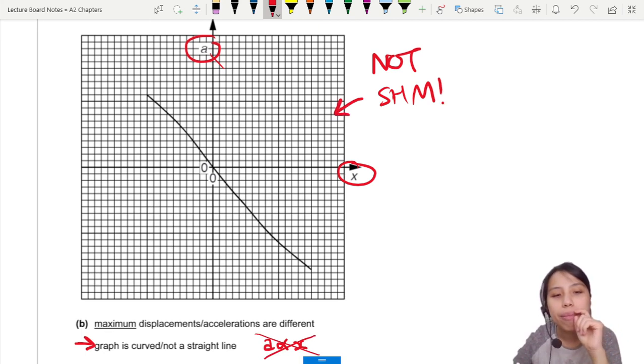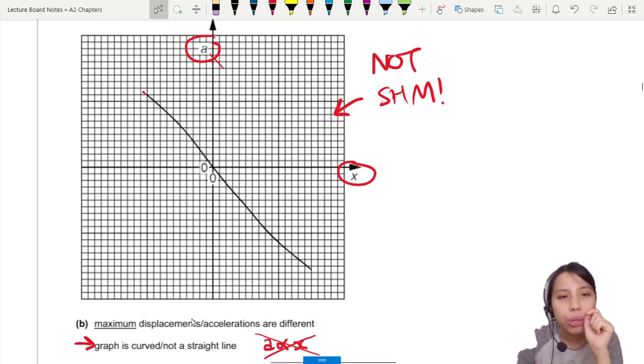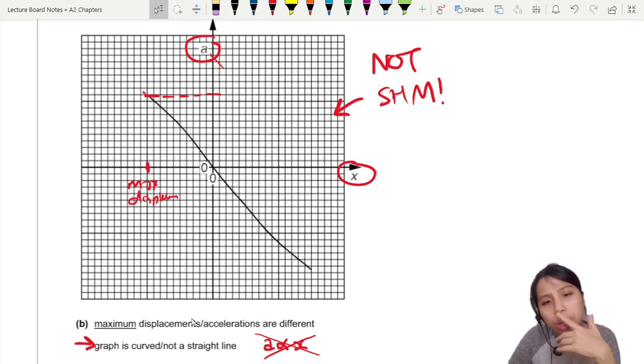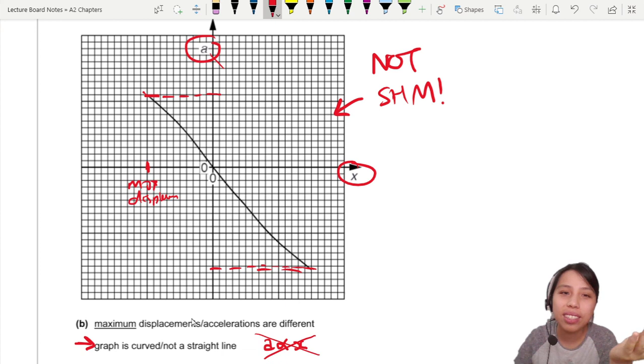Second problem. Maximum displacement or acceleration are different. So that means on one side of the graph, you come until this acceleration, maximum displacement. On the other side though, your acceleration goes until so big. Asymmetrical graph, which is not simple harmonic motion should be symmetrical on either side. So something's wrong here. Your system is not simple harmonic motion. So be careful when you come across graphs. They will ask you to explain. You need to know how to do that. So that's all for this video. I'll see you in the next one.